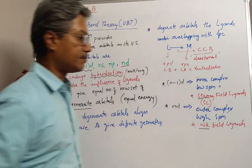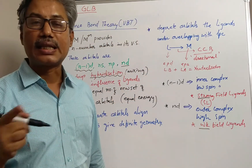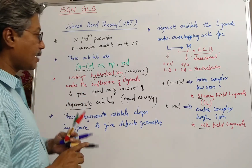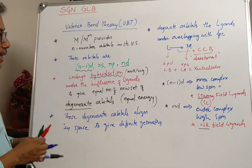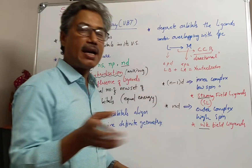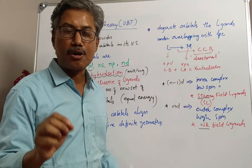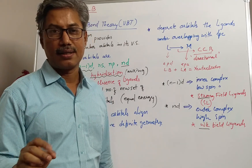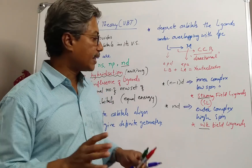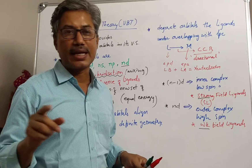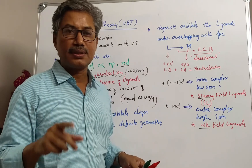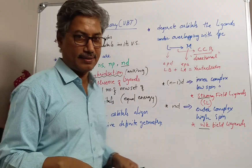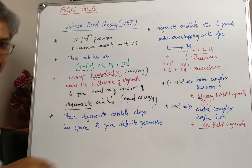Inner complexes are due to the participation of strong ligands and outer complexes are due to the participation of weak ligands. The question arises: what are these strong and weak ligands? The ligands are classified as strong and weak according to the spectrochemical series, which is given in the NCERT textbook and we will see that. Thank you.